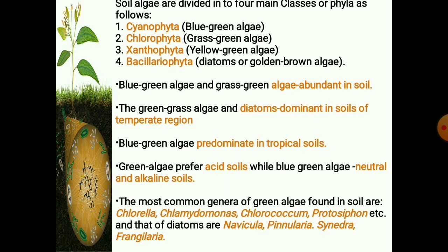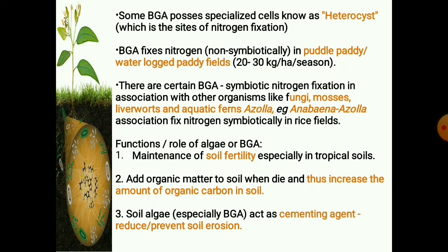Green algae prefer acid soils while blue-green algae are commonly found in neutral and alkaline soil. The most common genera of green algae found in soil are Chlorella, Chlamydomonas, Chlorococcum, and Protosiphon. Common diatom genera include Navicula, Pinnularia, Synedra, and Fragilaria. Some blue-green algae possess specialized cells known as heterocysts, which are the site of nitrogen fixation. Blue-green algae fix nitrogen in waterlogged paddy fields, and certain blue-green algae can perform symbiotic nitrogen fixation in association with fungi, mosses, liverworts, and aquatic ferns like Azolla. The Anabaena-Azolla association fixes nitrogen symbiotically in rice fields.